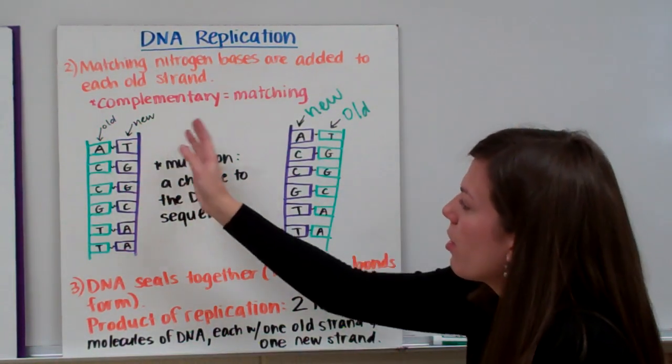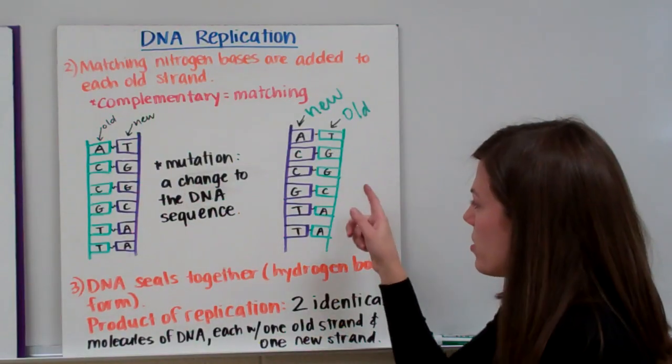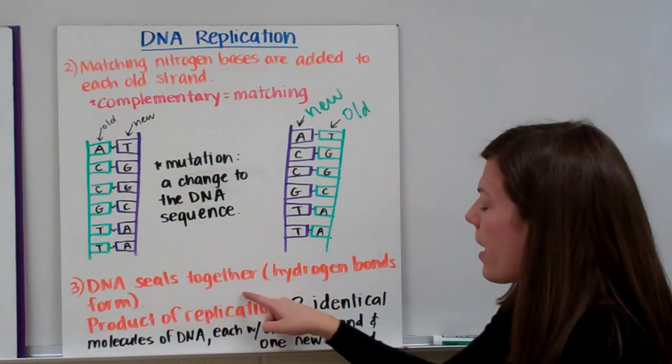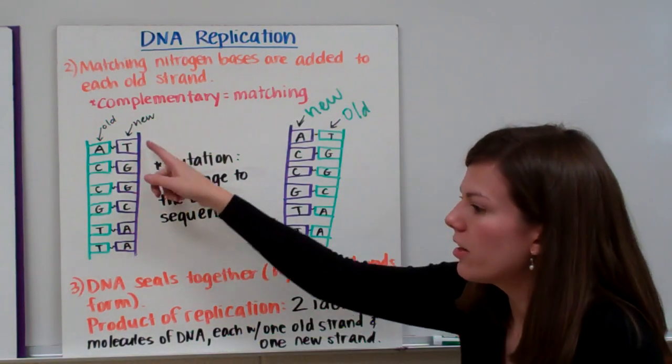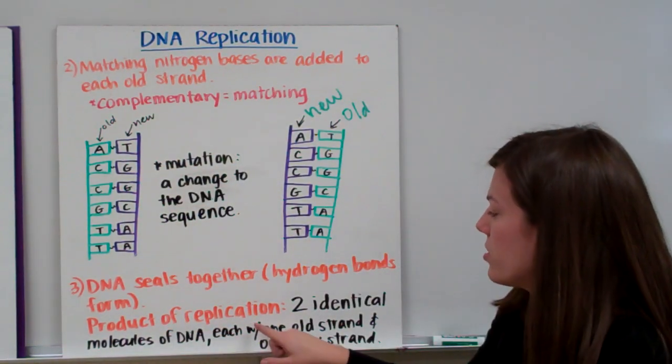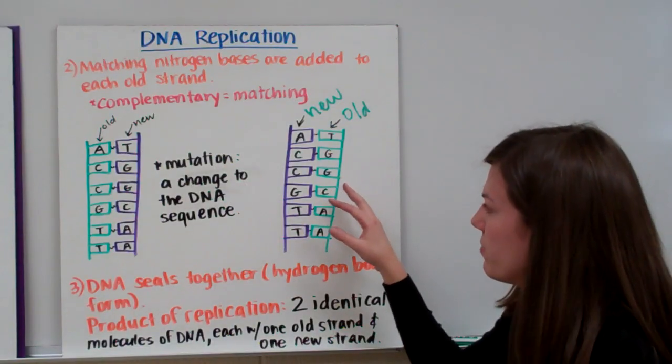After we've brought in our new nitrogen bases to each side of the DNA, the DNA is going to seal back together. If you'll remember, hydrogen bonds are the bonds that seal our two strands of DNA together. And our product of replication are two identical molecules of DNA.